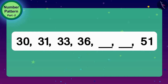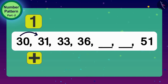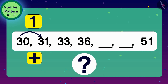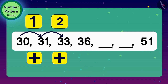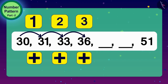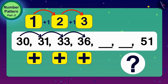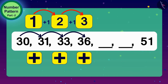What would we do if we had to reach from 30 to 31? We will add 1 to 30. And what do we have to do to get 33 from 31? We have to add 2. And if we have to reach 36 from 33, we will add 3. Children, you can see that the number being added every time is increasing by 1 to get the next number in this number pattern. This number pattern is a growing pattern.